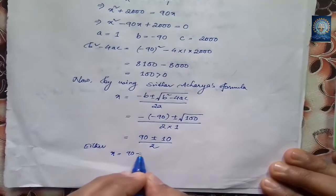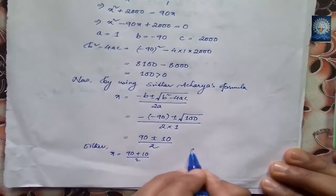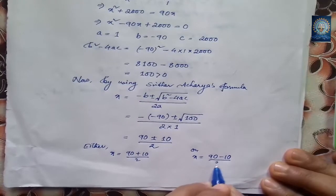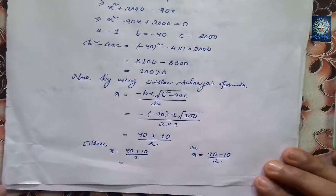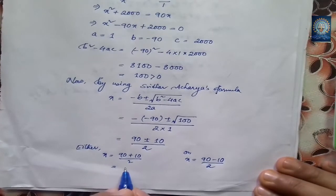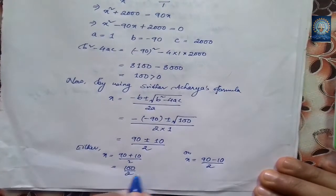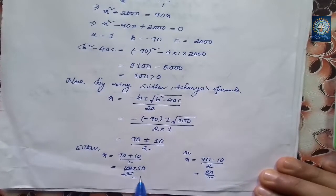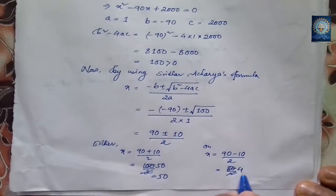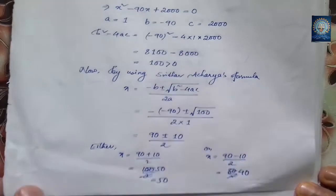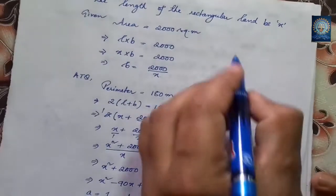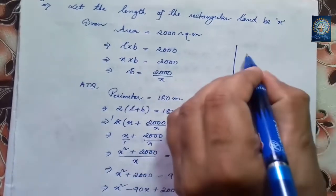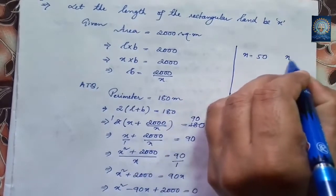So either x equals (90 + 10) by 2 or x equals (90 − 10) by 2. That gives 100 by 2 equals 50, or 80 by 2 equals 40. So we have two values of x: one is 50 and another is 40.